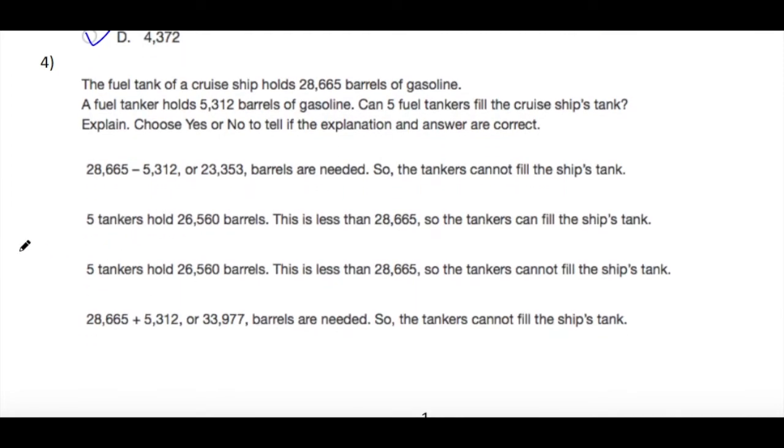The fuel tank of a cruise ship holds 28,665 barrels of gasoline. A fuel tanker holds 5,312 barrels of gasoline. Can five fuel tankers fill the cruise ship's tank? Explain. Choose yes or no to tell if the explanation and answer are correct. Option states: 28,665 minus 5,312, or 23,353 barrels are needed, so the tankers cannot fill the ship's tank. Another states: 5 tankers hold 26,560 barrels, this is less than 28,665, so the tankers can fill the ship's tank.